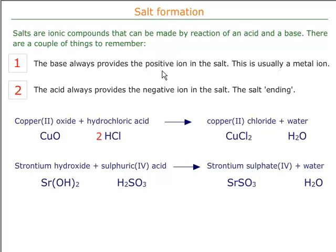The base always provides the positive ion in the salt. So if we were dealing with sodium chloride, sodium is the positive ion — it will come from the base. The base isn't fixed; it could be sodium hydroxide, it could be sodium oxide, it could even be sodium carbonate. A positive ion is usually a metal ion in the salt, but it could be ammonium — compound ions, or ions that are made up of several different atoms joined together, made into a positive charge.